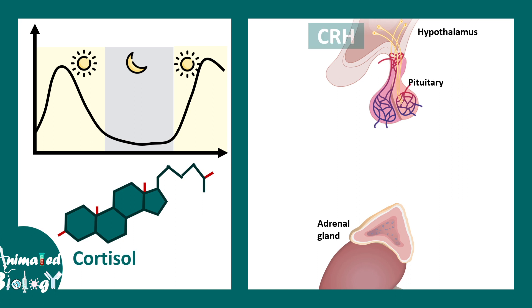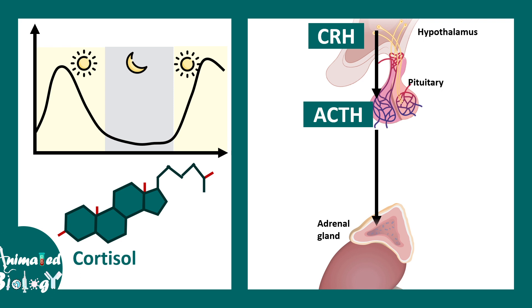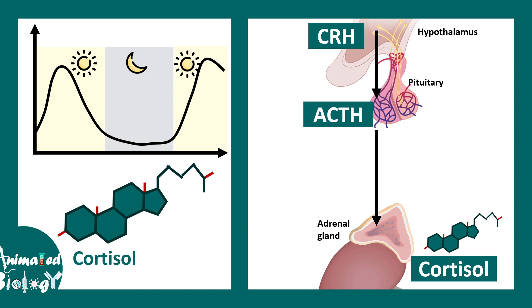In the hypothalamus there is corticotropin-releasing hormone (CRH). This hormone stimulates the anterior pituitary to release ACTH — adrenocorticotrophic hormone — which in turn stimulates the adrenal cortex to release cortisol. When cortisol levels are high, it provides negative feedback to both the anterior pituitary, decreasing ACTH, and to the hypothalamus, decreasing CRH.